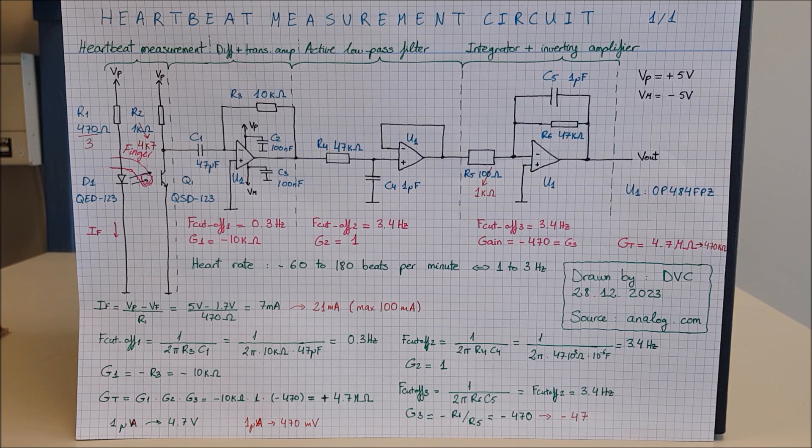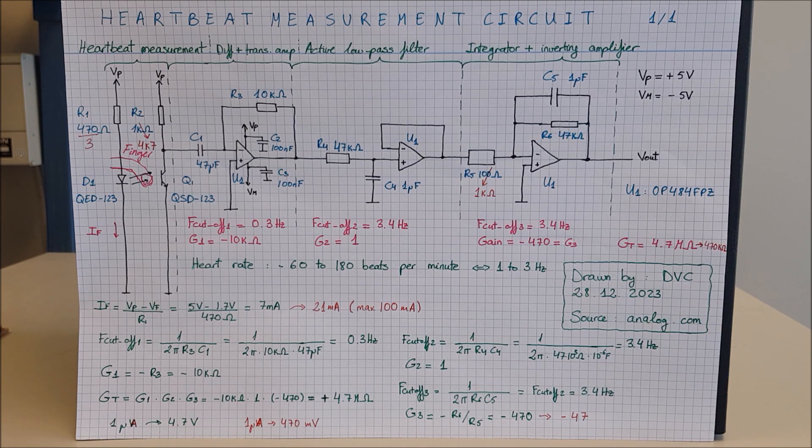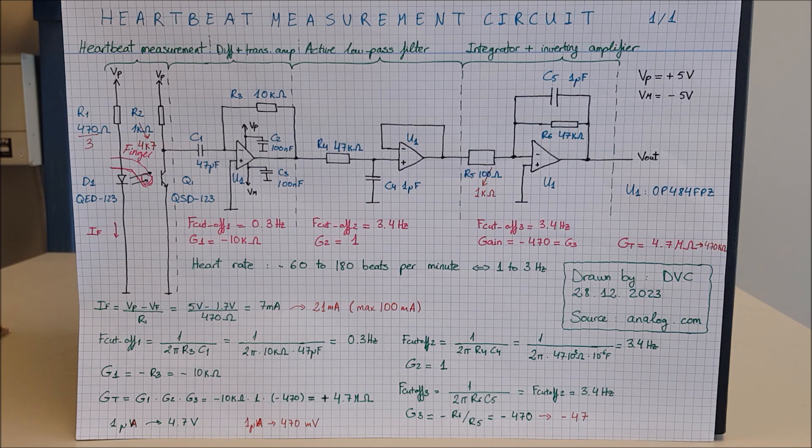The way we measure heartbeat is by shining infrared light through a finger. Infrared light has the highest penetration compared to blue light and can be easily detected with a phototransistor, similar to how your remote uses infrared light and there is a phototransistor in your TV to detect it.